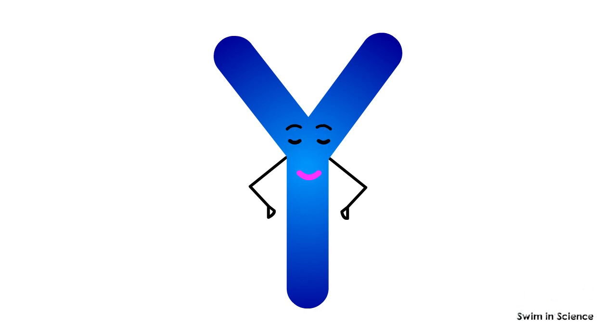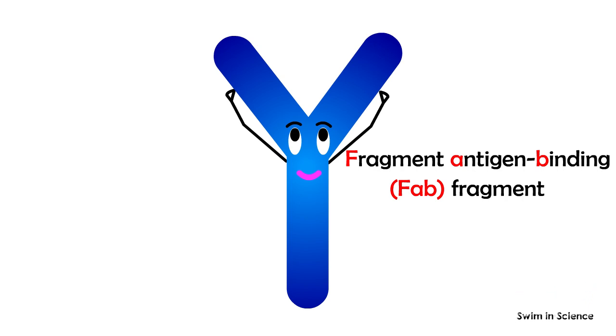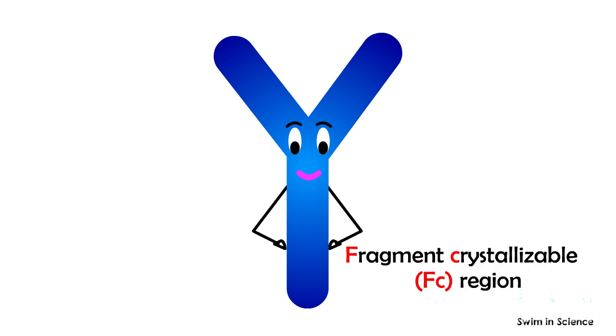An antibody has two main parts which are involved in its functions. They are fragment antigen binding, or fab fragment, and fragment crystallizable region, that is, FC region.